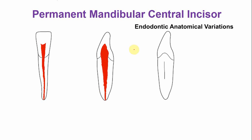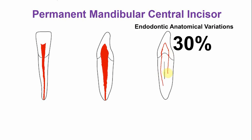The most common variation, which occurs in around 30 percent of the mandibular central incisors, is a two-canal configuration. In those 30 percent of the mandibular incisors the outline of the pulp chamber is the same, but there are two canals. And these two canals unite again in the apical one-third.